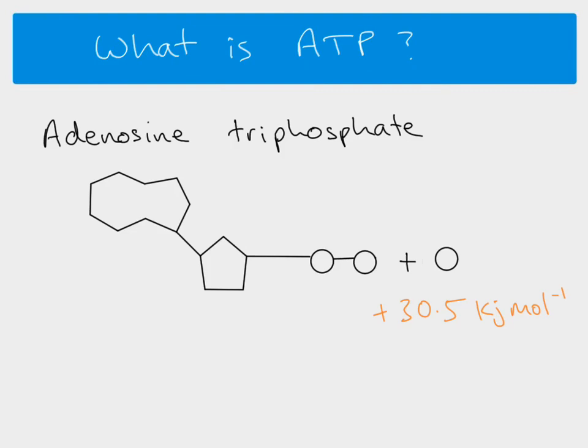ATP is very readily hydrolyzed, which makes it very good at what it does. It's very small, which means it can move around the cell easily, and it's water soluble, which means it can take part in metabolic reactions. The ADP and the separate inorganic phosphate can then be recombined, so ATP can be converted to ADP and Pi, which can then get recombined into ATP — it's constantly being recycled, which is another feature that makes it a very suitable universal energy currency.